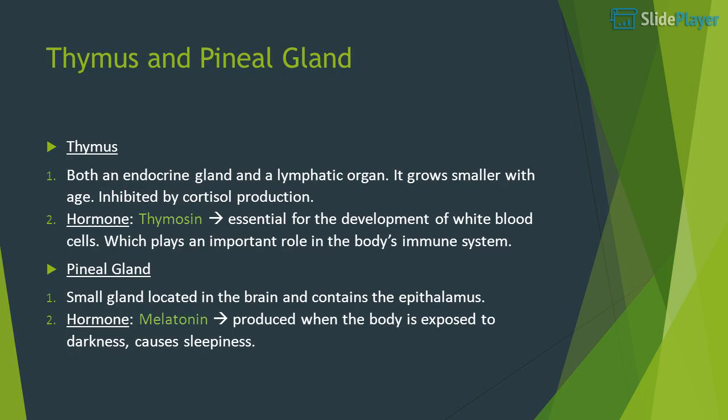Thymus: both an endocrine gland and a lymphatic organ, it grows smaller with age and is inhibited by cortisol production. Hormone: thymosin is essential for the development of white blood cells, which plays an important role in the body's immune system.